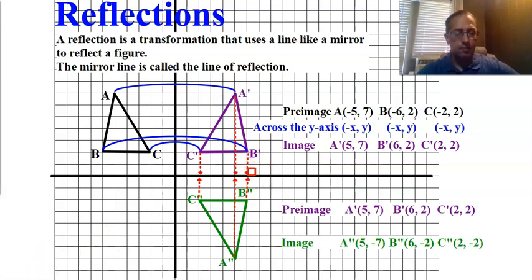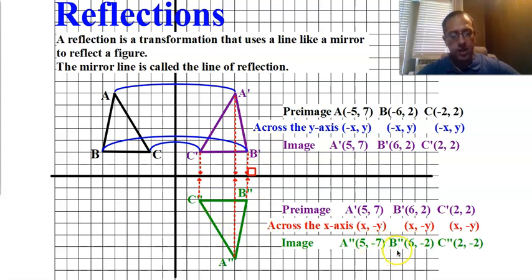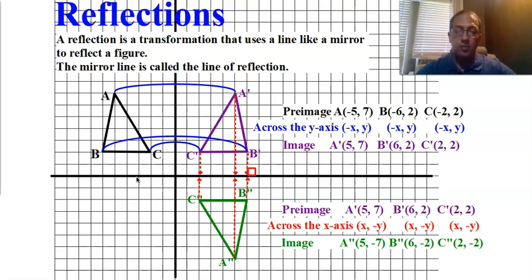Let's take a look at these coordinates. The pre-image — the purple ABC — and the image: notice the x values stay the same, but the y values change signs. All of these positive y values turn negative. If I reflected back across, all of these negative y values would change positive. This makes it very easy to do a reflection over the x-axis: all we have to do is take the y value and change the sign. If I had a point at 5, negative 6, and I reflected over the x-axis, it turns into 5, positive 6. Very, very simple.